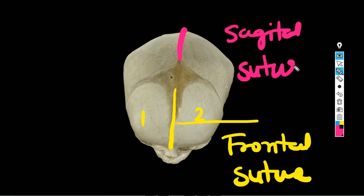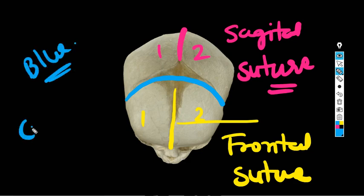This suture in blue color, these are coronal sutures between parietal bone and frontal bone.